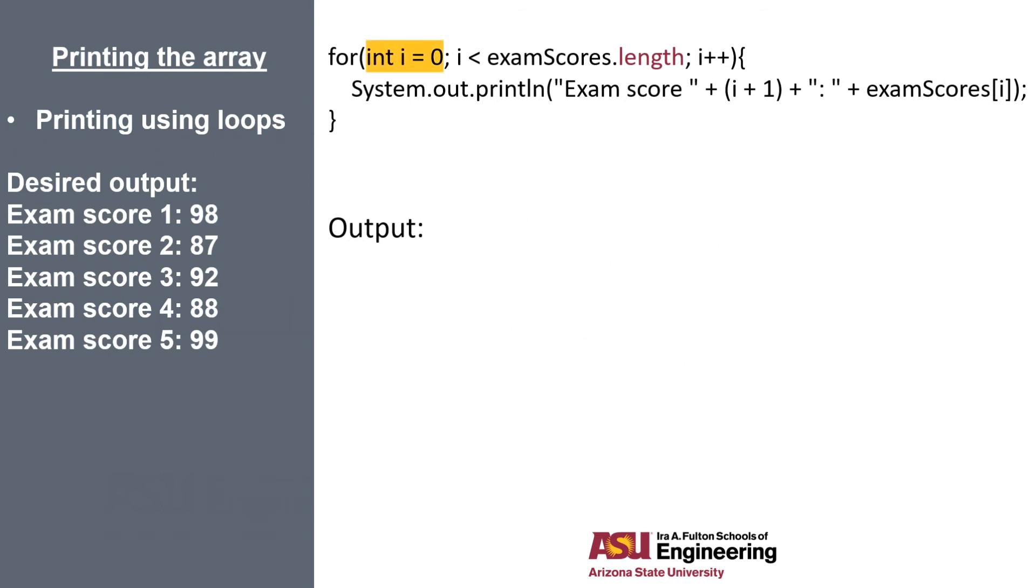So we're setting our index equal to 0 at first. And we'll be iterating through while i is less than the length of the array. And remember, the length of our array is 5. So i will be 0, 1, 2, 3, and 4. Because we'll be incrementing i once we reach the end of our for loop.